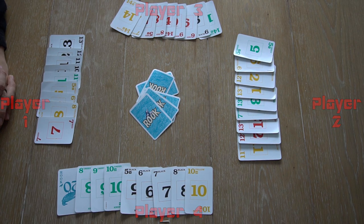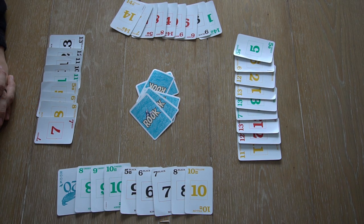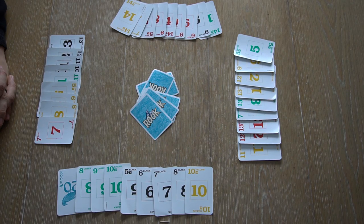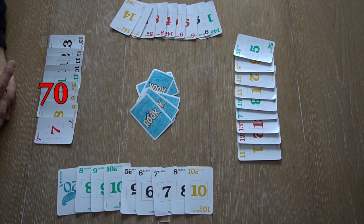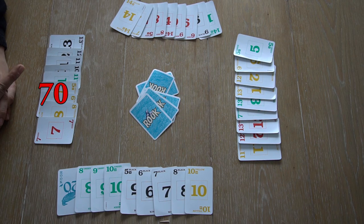So in our first round, the dealer, player 1, does the first bid. Player 1 bids 70. Then going clockwise, player 3 bids 75.